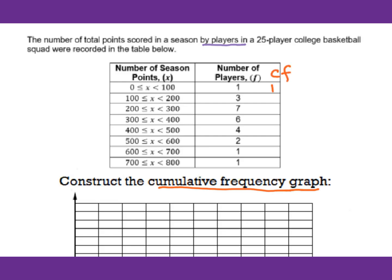First one is 1. 1 add 3, that's 4. 4 add 7, 11. 11 add 6, 17. 17 add 4, 21. 21 add 2, that's 23. 23 add 1, 24. Add 1, 25. We use the cumulative frequency table and also the number of season points given to construct this cumulative frequency graph.